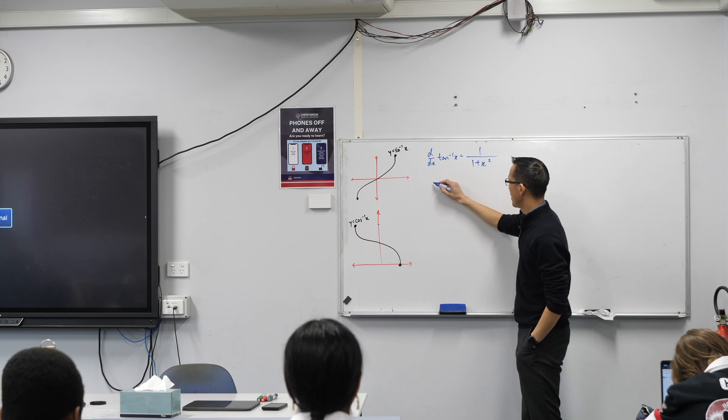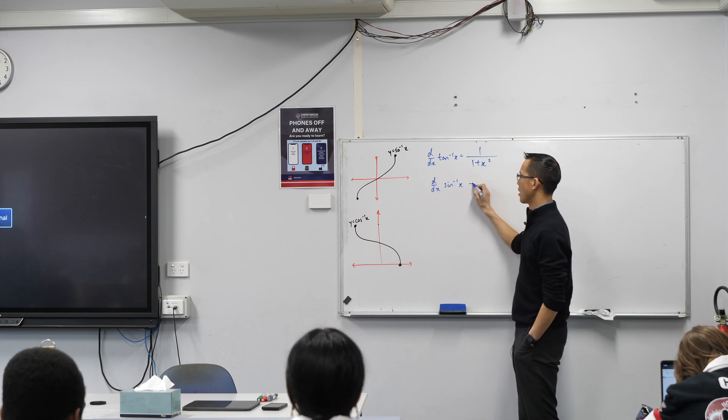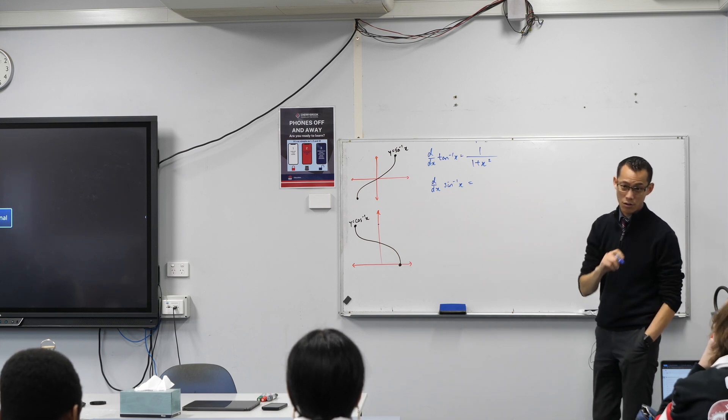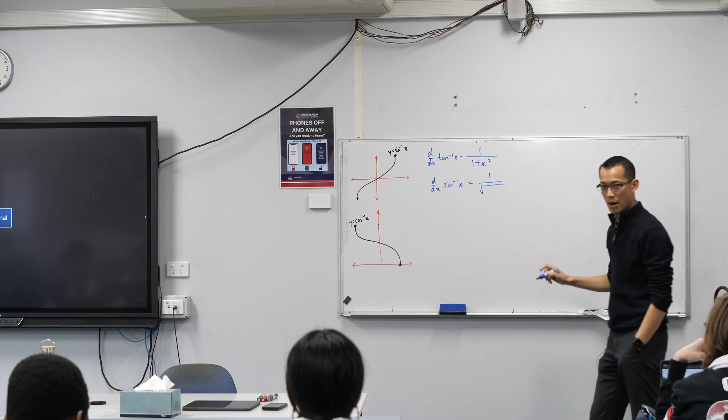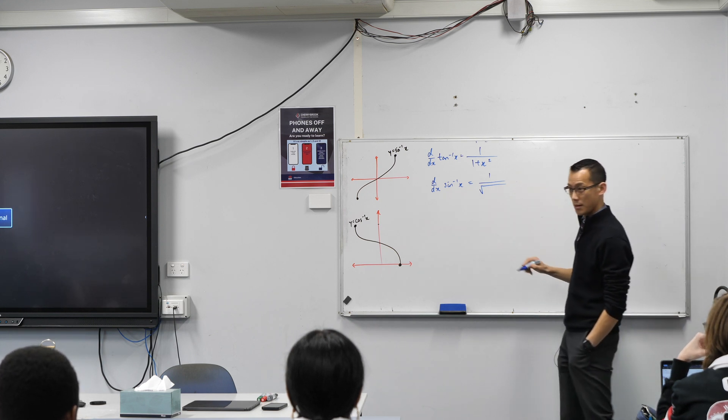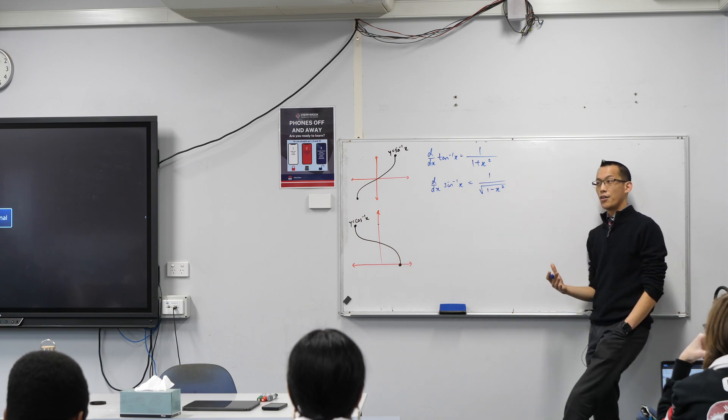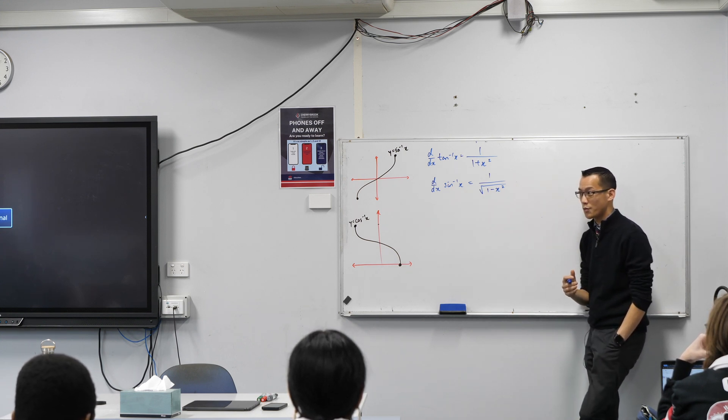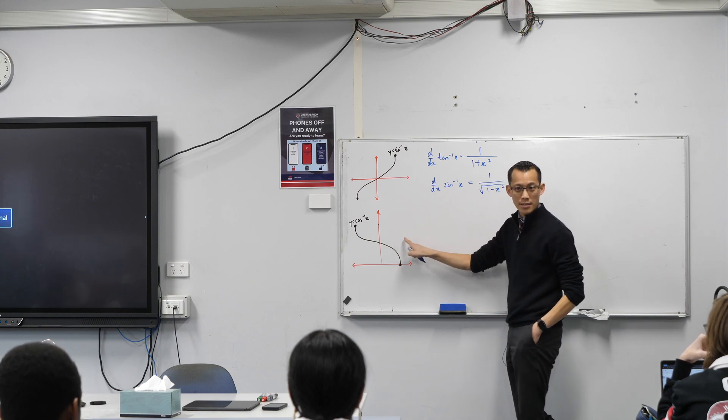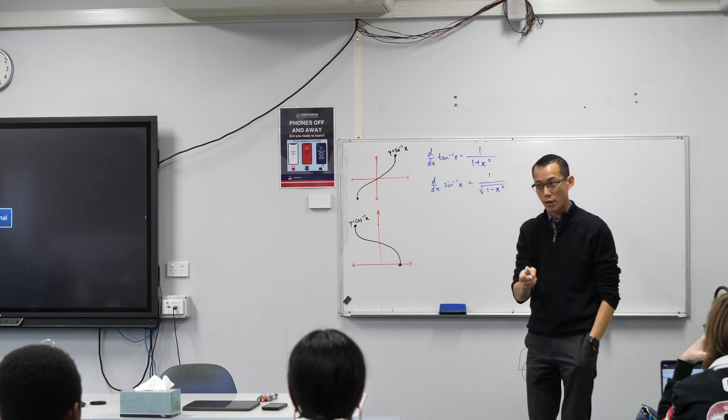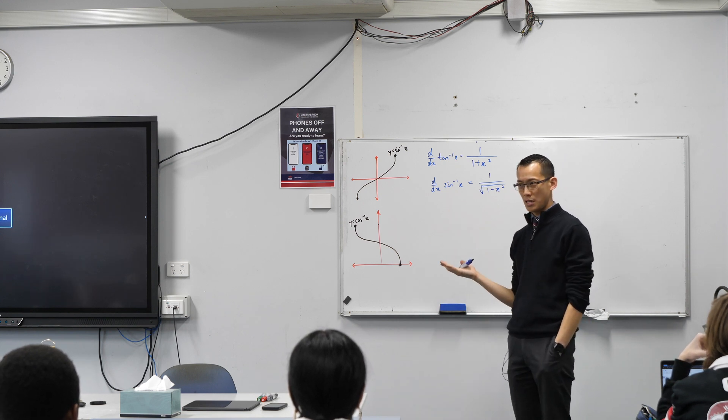Then we went on to sine and we found that it was ever so slightly messier. We still used the same Pythagorean identity, but we ended up with a square root down here, right? What was underneath the square root? 1 minus x squared. Now, those of you who were observant would have noticed that we didn't go through the whole process again to do this.